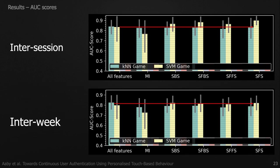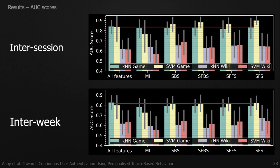The results are also fairly stable over time, although we see a minor performance loss for all models, as behavior may change a little between the inter-session and inter-week results. When we observe the results for reading Wikipedia articles, we come to the same conclusion as others — not as easy to predict as with game models. However, we still see improvements using sequential forward selection and support vector machines is still superior.